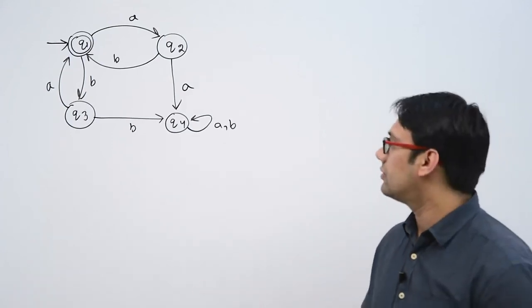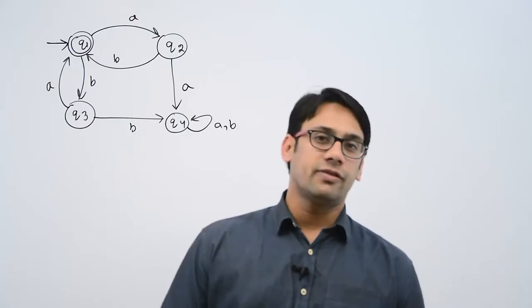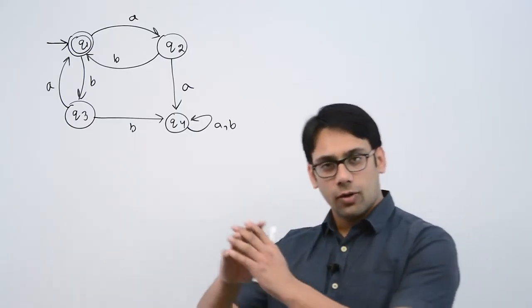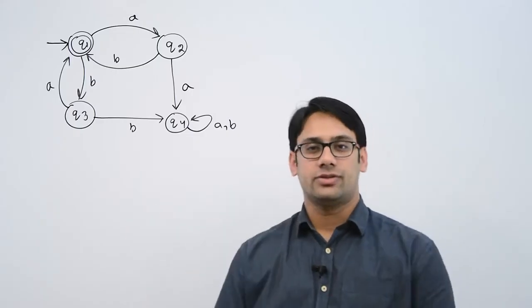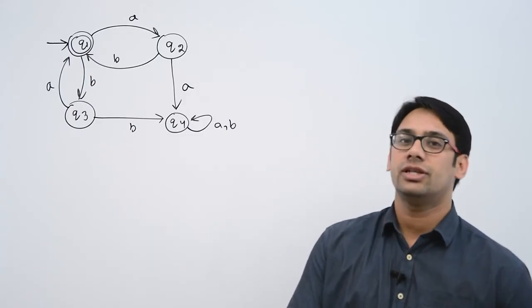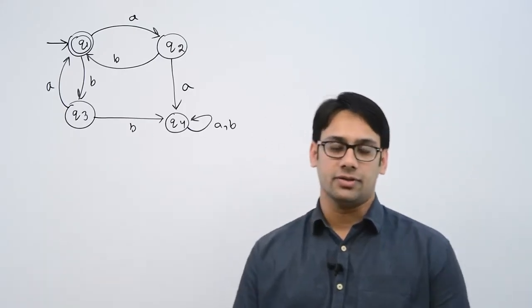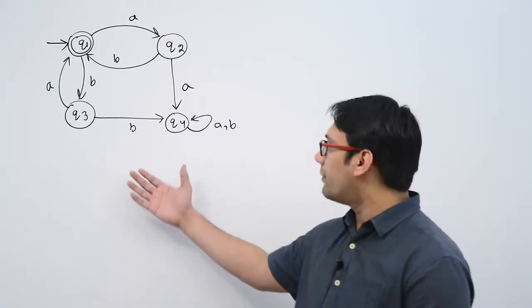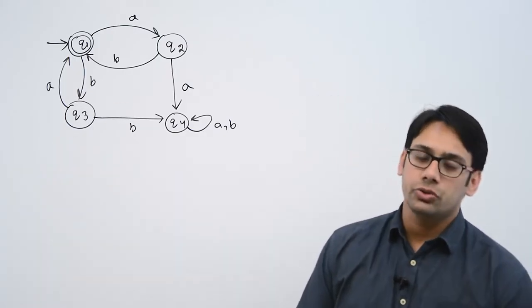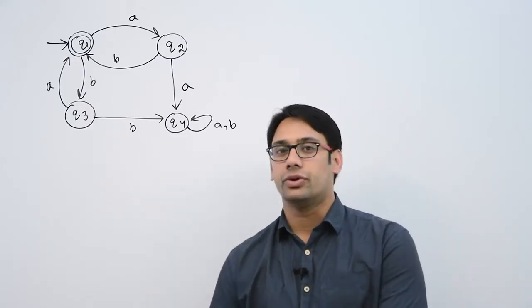Now let us look at this finite automata. I have taken a complicated example directly instead of taking simple examples because I think this method is so simple that you can jump straight to complicated cases. Here we need to make a regular expression for this given finite automata, and we are going to use Arden's method to derive the regular expression.